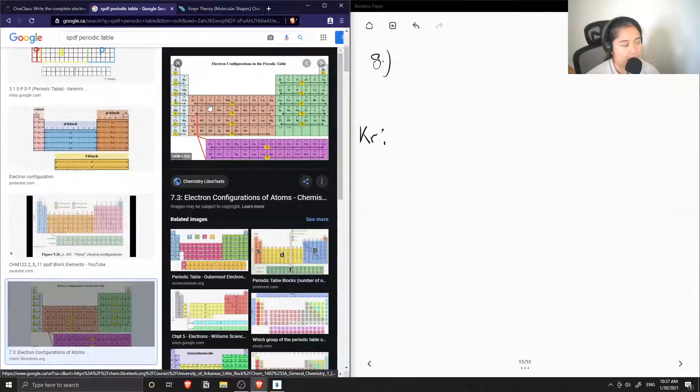and the D block are the middle transition metals, and the F block are the last two rows, the lanthanides and actinides.